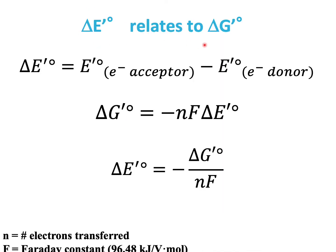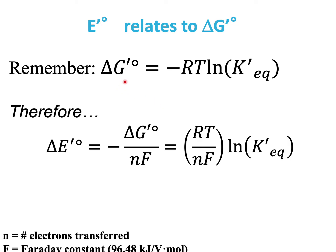Delta E relates to delta G. Delta E is given by E of the acceptor minus E of the donor. Delta G is related to delta E by the equation: delta G equals minus N times F times delta E, where N is the number of electrons and F is the Faraday constant. Since delta G equals minus RT times Ln of K equilibrium, delta E becomes minus delta G divided by NF, which equals RT divided by NF times Ln of K equilibrium. Hence, we have the Nernst equation.